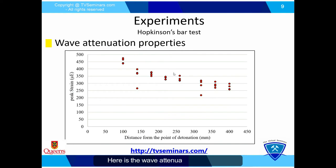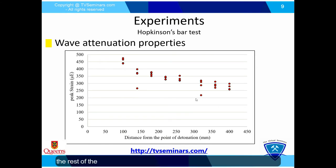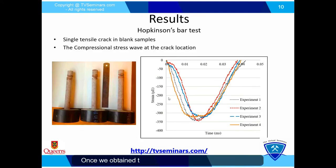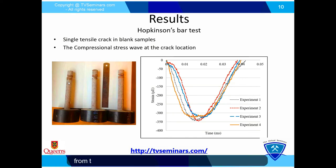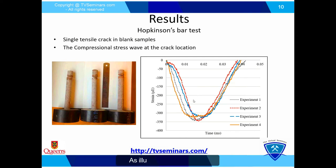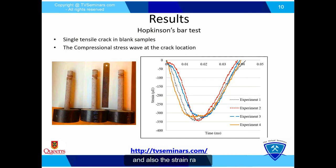Here are the wave attenuation properties. Despite a couple of outliers due to gauge malfunction, the rest of the data provided a good understanding of wave attenuation. Once we obtained the crack location on blank samples, the pulse readings from the closest gauges were obtained to account for the wave which caused the crack. As illustrated in the graph, the pulses had very similar peak strain and strain rate.